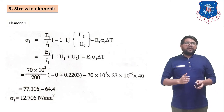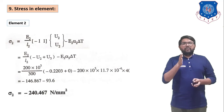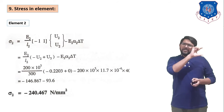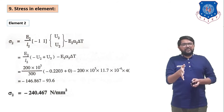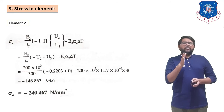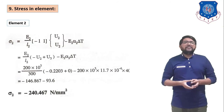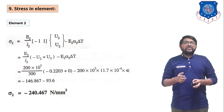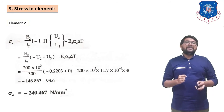For element 2, σ₂ = (E₂/L₂)(−U₂ + U₃) − E₂α₂ΔT. Substituting all values (E₂, L₂, U₂ = 0.2203, U₃ = 0, alpha₂, ΔT = 40), we get σ₂ = −240.467 N/mm². These are the element stresses.